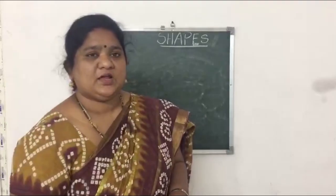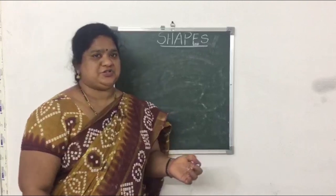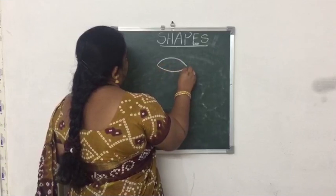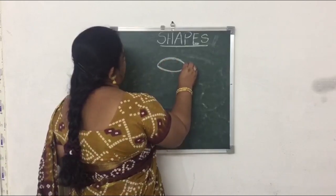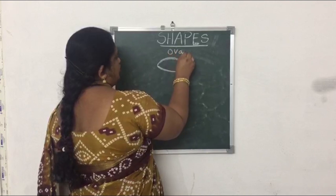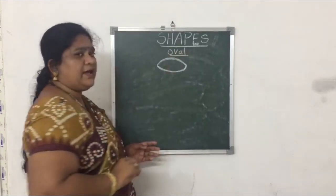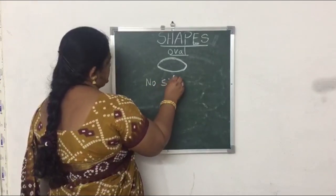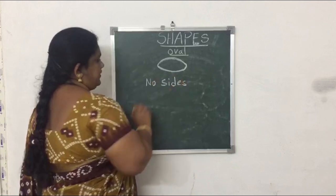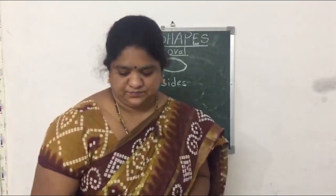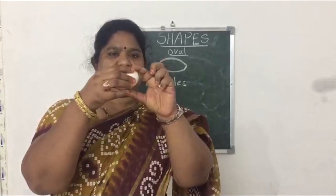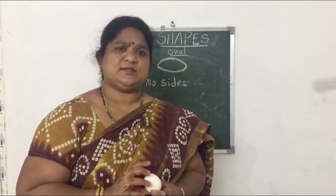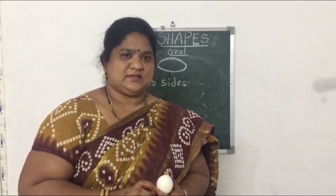Now we will go to the next shape. What is this, children? Any guesses? This is an oval. Does oval have any sides? No — no sides. What is the example of oval? What is this? This is an egg.